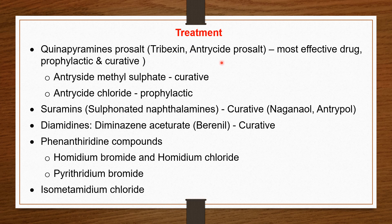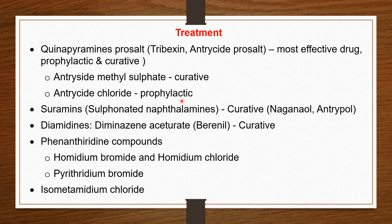For treatment, the drug of choice is quinapyramine prosalt. Examples are Trypacide or Antrycide prosalt. This is the most effective drug and is both prophylactic and curative — it gives prophylaxis for about five to six months. Quinapyramine prosalt contains two salts: Antrycide methyl sulfate, which is the curative agent, and Antrycide chloride, which is the prophylactic part, giving prophylaxis for about five months.